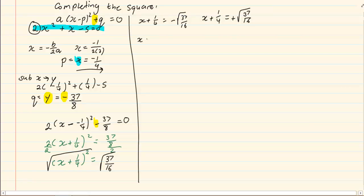We further solve x is equal to negative root of 37 over 16 minus a quarter, x is equal to positive root of 37 over 16 minus a quarter.